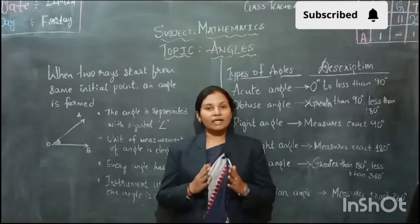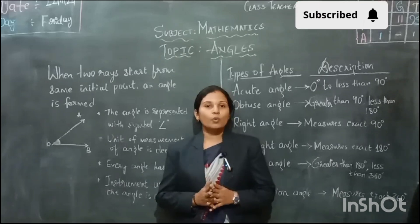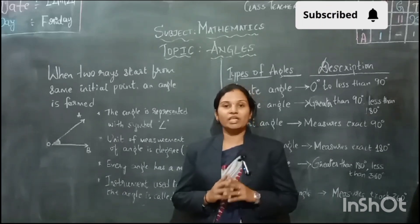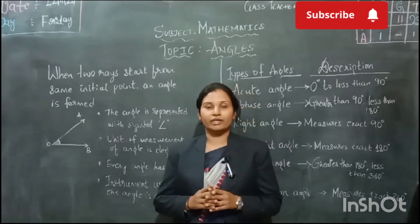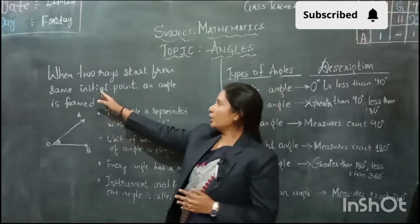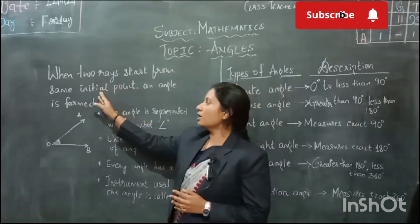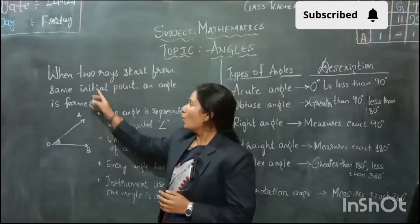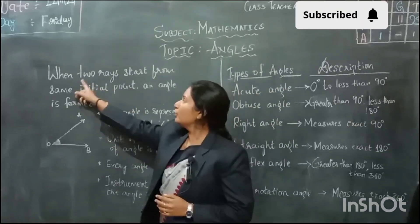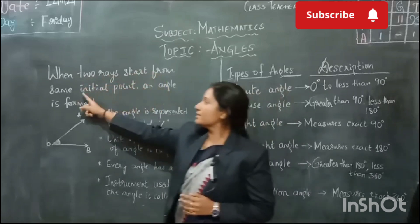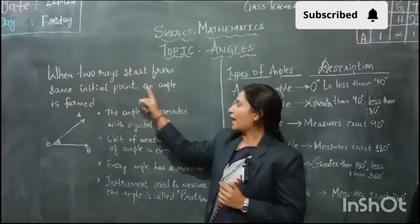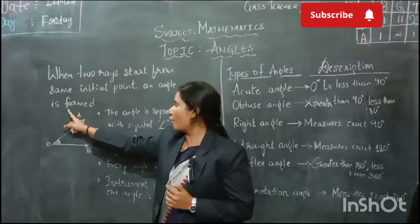What is an angle? An angle is formed when two rays start from a same initial point. What is the meaning of initial point? Initial point means a common point. So, how is the angle formed? When two rays start from the same initial point, that is a common point, an angle is formed.